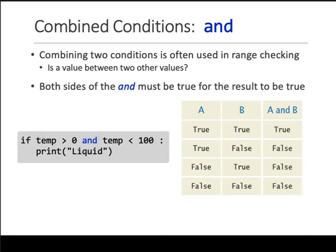In your conditions and if-else statements, you can combine testing conditions using the keywords 'and' or 'or'. For example, here you're checking if temperature is greater than zero and temp, the same variable, is less than 100 - you use the keyword 'and'.